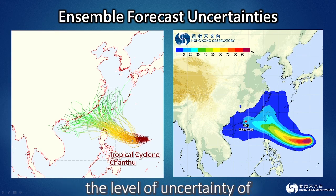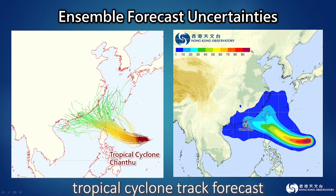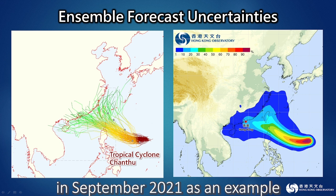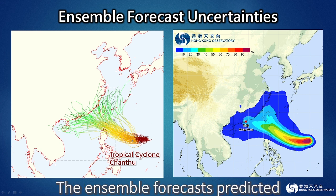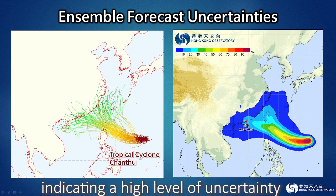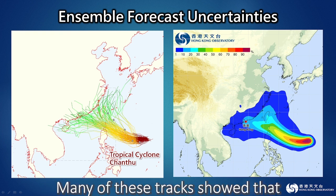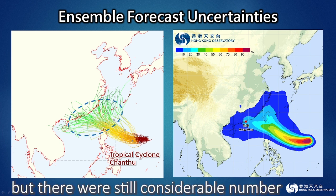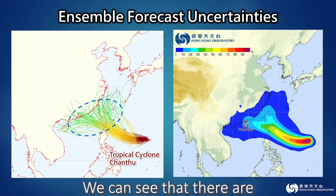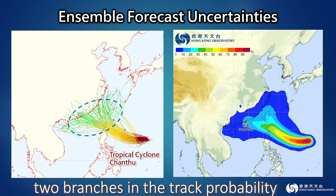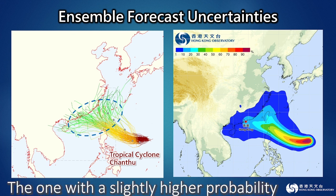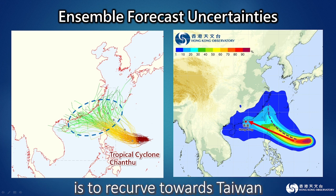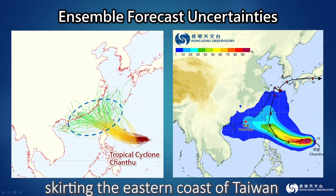The ensemble forecast can reflect the level of uncertainty of tropical cyclone track forecasts and provide clues for other possible scenarios. Take tropical cyclone Chantu in September 2021 as an example. The ensemble forecast predicted bifurcated tracks, indicating a high level of uncertainty. Many tracks showed it would make landfall over Guangdong after crossing the Luzon Strait, but a considerable number of tracks showed it moving northwards and approaching Taiwan. The track probability forecast map shows two branches — one with a slightly higher probability crossing the Luzon Strait, and another recurving towards Taiwan. Finally, Chantu turned northwards, skirting the eastern coast of Taiwan.